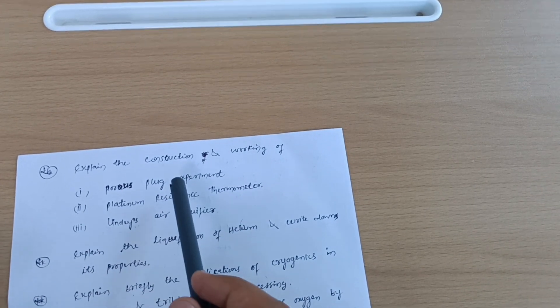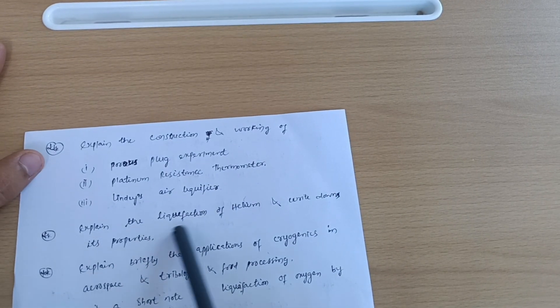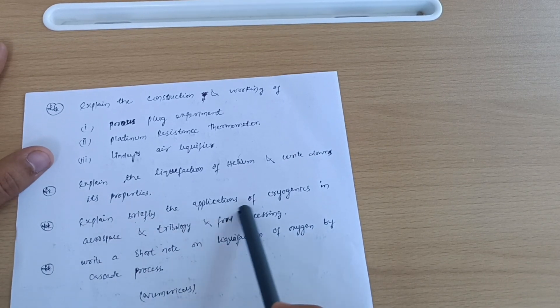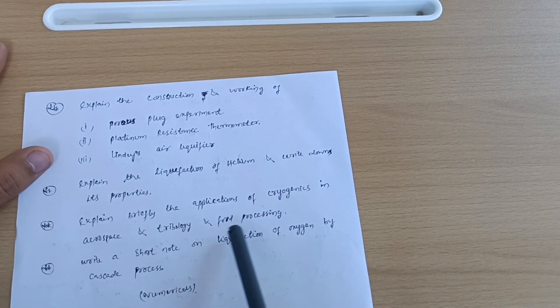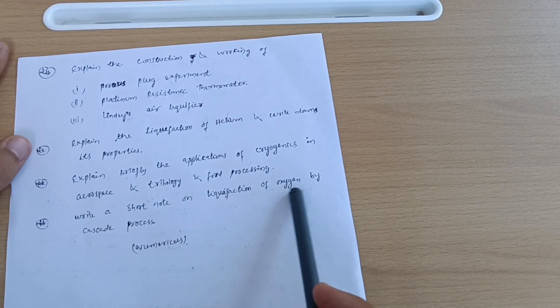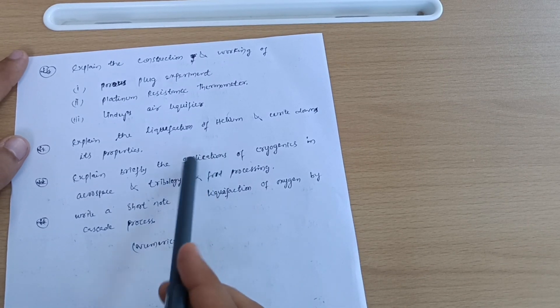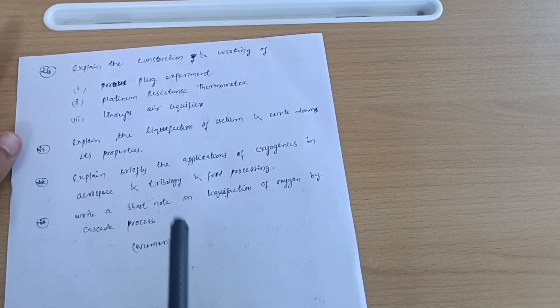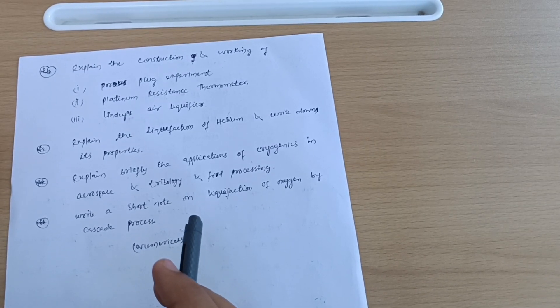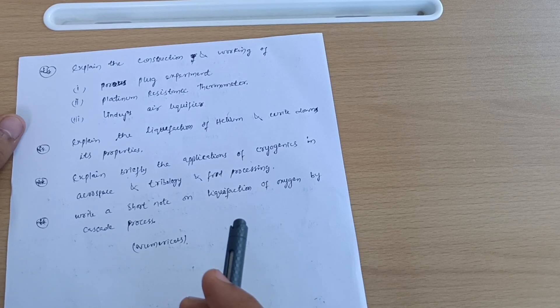Explain the liquefaction of helium and write down its properties. Explain briefly the applications of cryogenics in aerospace, tribology and food processing. Last question: write a short note on liquefaction of oxygen by cascade process. Also, numericals are simpler ones in this chapter - if you are feeling easiness, if you are comfortable with the numerical part, then go through it.